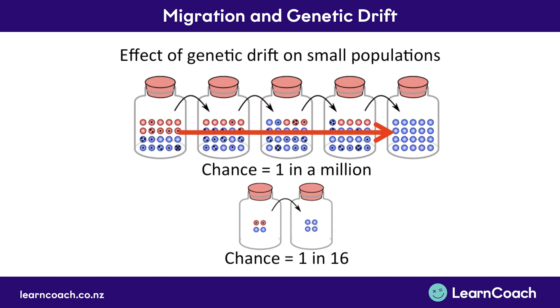This can work with migration as well as genetic drift, because if these two marbles happen to leave a population — they fly away for some reason — then again you're going to completely lose that allele from the population.